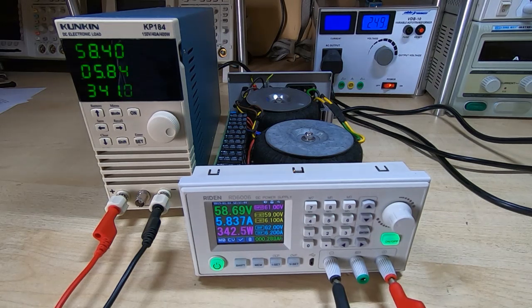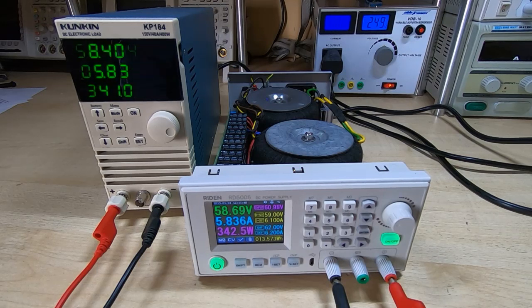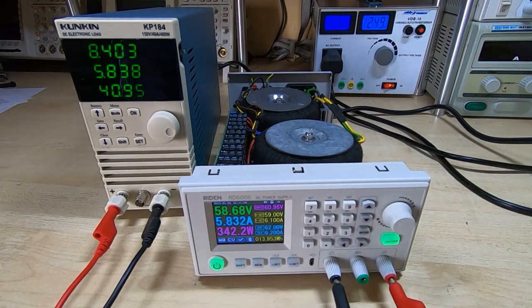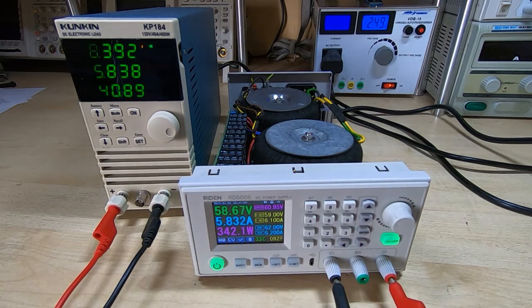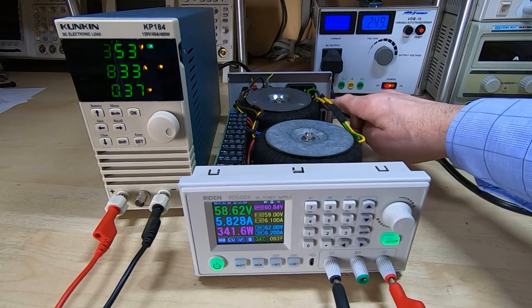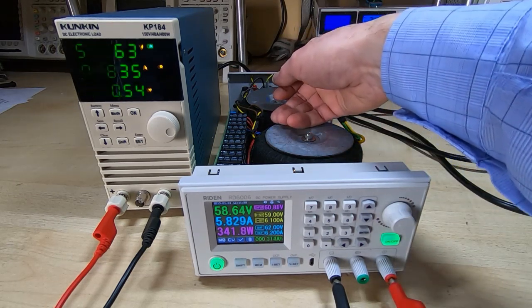I don't need that for what I intend to use this for, but it would be nice to be able to max out the Ryden supply. Currently we're outputting 342 watts, and nothing is really getting warm.